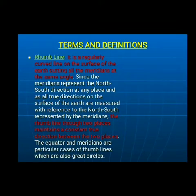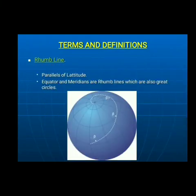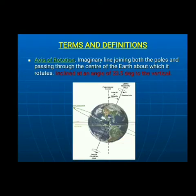Rhumb line: a curved line which cuts all meridians at the same angle is called a rhumb line. Axis of rotation: an imaginary line through which the earth rotates, inclined at 23.5 degrees to the vertical.